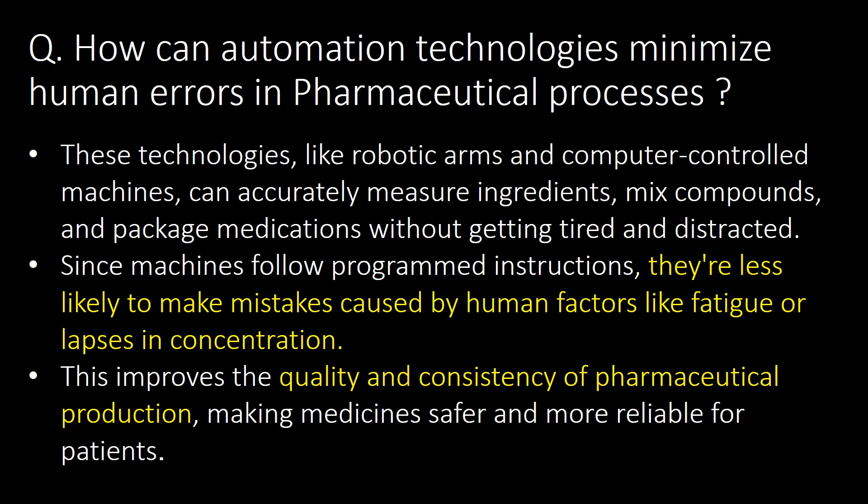How can automation technologies minimize human errors in pharmaceutical processes? Technologies like robotic arms and computer-controlled machines can accurately measure ingredients, mix compounds, and package medications without getting tired or distracted. Since machines follow programmed instructions, they are less likely to make mistakes caused by human factors like fatigue or lapses in concentration, improving quality and consistency of pharmaceutical production and making medicines safer and more reliable for patients.